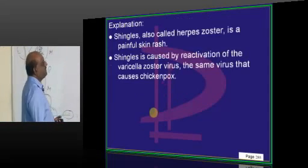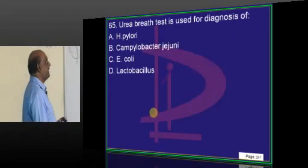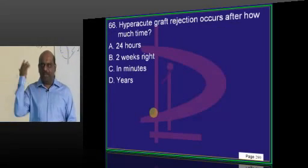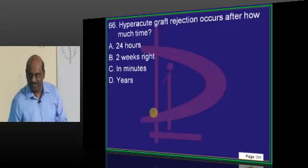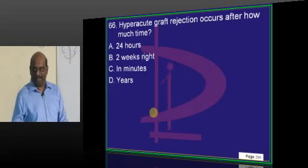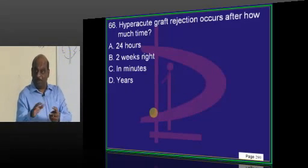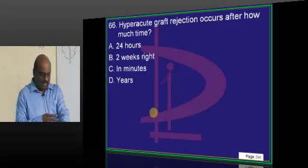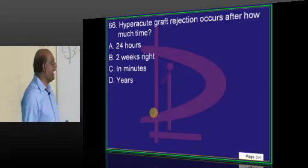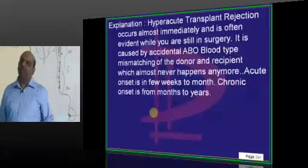Shingles is varicella zoster — chicken pox reactivated in an immunocompromised state. H. pylori — everybody knows. Hyperacute graft rejection is due to preformed antibodies. While doing transfusions, if you don't properly match and do transfusions repeatedly, preformed antibodies form. The moment you put a graft, they go and detect it. That is called hyperacute rejection — it occurs within minutes.